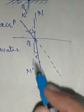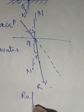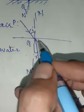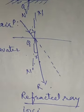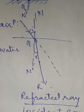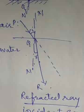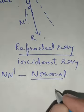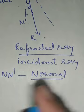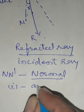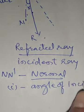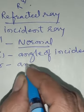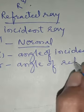N-dash QR is called the refracted ray, and PQN is called the incident ray. N-dash is the normal. Normal is that ray of light which will not be deviating to the refracting surface. I is the angle of incidence, and R is called the angle of refraction.